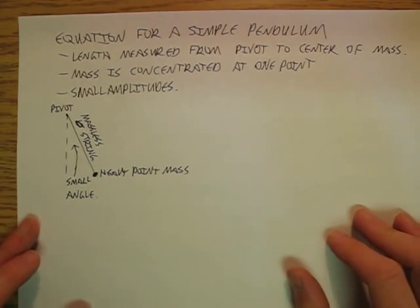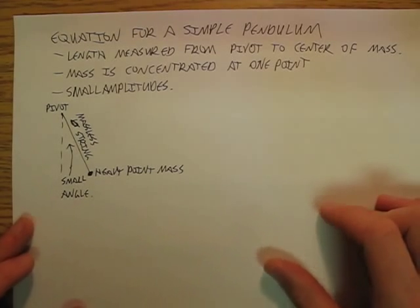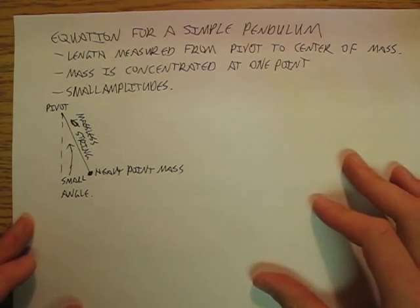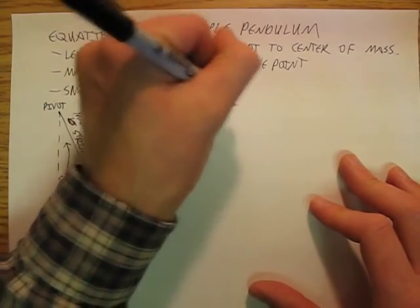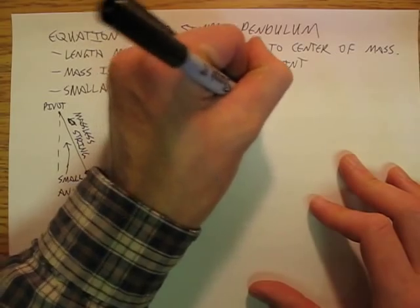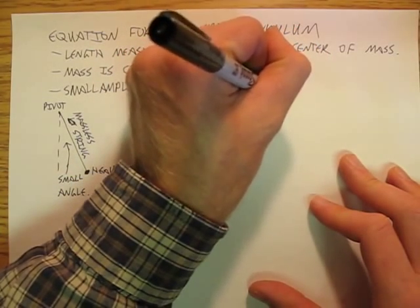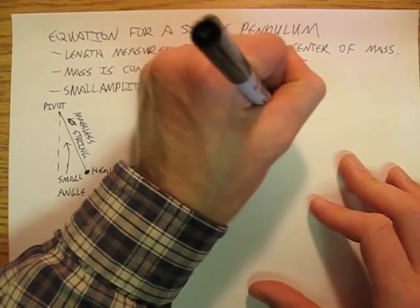And what constitutes a small angle? Well, it depends on who you're talking to. So given all of those qualifications, we're going to say that T equals 2 pi square root of L over G.